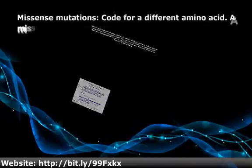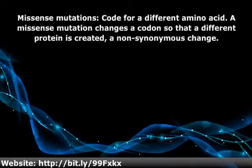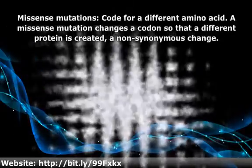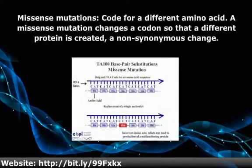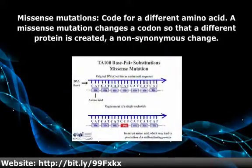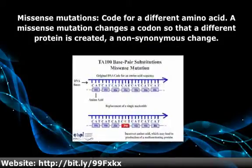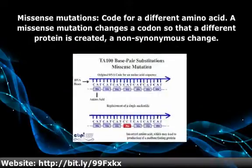Missense mutations code for a different amino acid. A missense mutation changes a codon so that a different protein is created — a non-synonymous change.